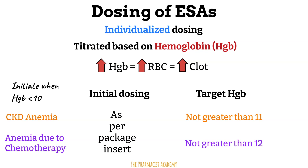These target hemoglobins are lower than the normal hemoglobin of adult males and females, but they have been shown to be efficacious with low toxicity in those disease states. Targeting a higher hemoglobin in these patients has been associated with increased mortality. It is recommended to always use the lowest dose possible to reduce the need for blood transfusions.